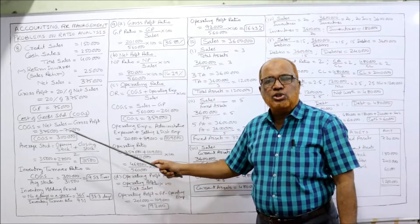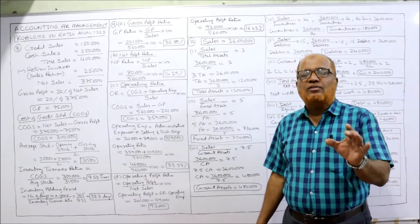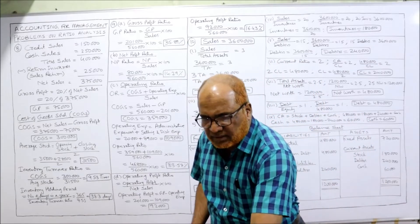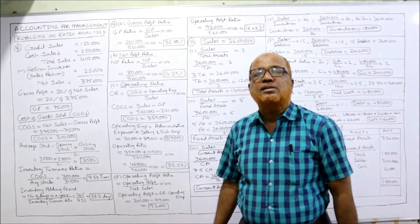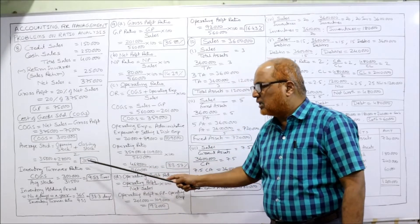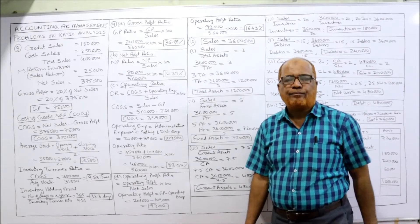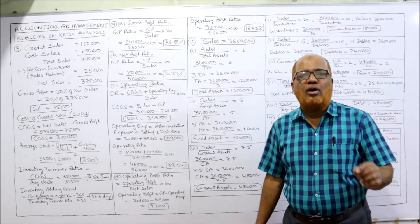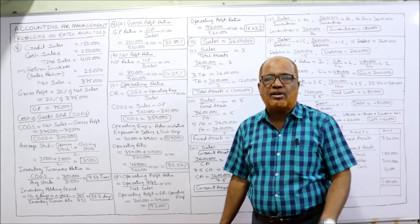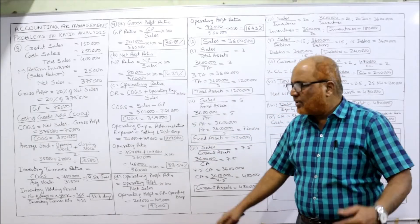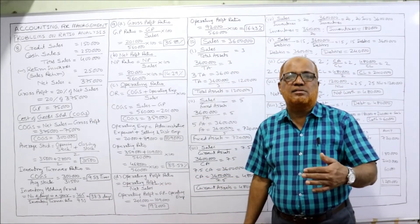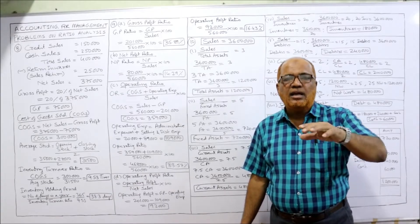Average stock formula: opening stock plus closing stock divided by 2. Opening stock is 28,000 and closing stock is 35,000. So average stock is 35,000 plus 28,000 divided by 2 equals 31,500. Inventory turnover ratio: cost of goods sold divided by average stock = 3,00,000 divided by 31,500 = 9.53 times. This means the inventory is converted into sales 9.53 times in a year.